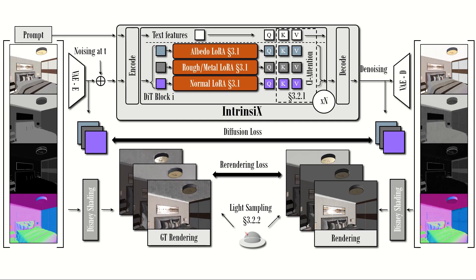Our method consists of two stages. First, we train separate LoRA modules for each intrinsic component, then we align them with a cross-intrinsic attention. We introduce a rendering loss that grounds the intrinsic components in image space. This ensures sharp and semantically meaningful details in each component.